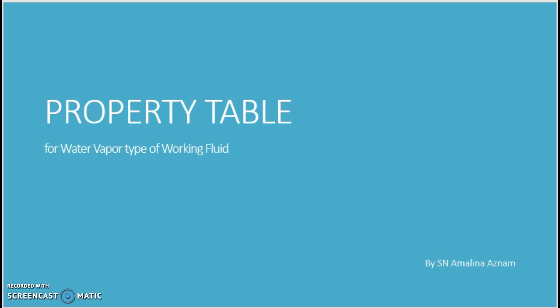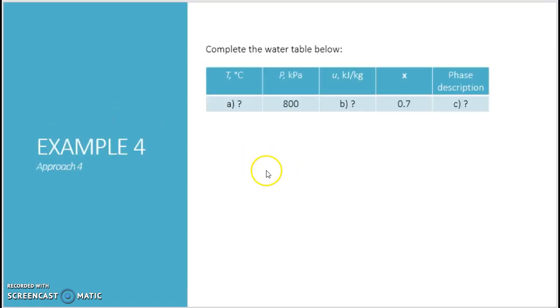So let's have a look at the example that we have here. So this is example number 4 with the next approach. Where given to you pressure and quality of X, and you need to find your temperature, your internal energy and what was the phase description.